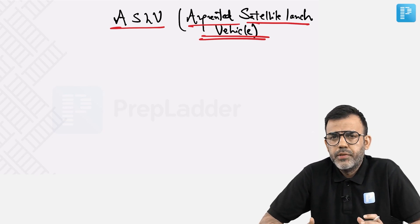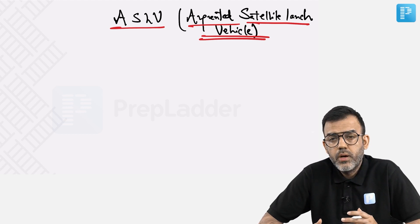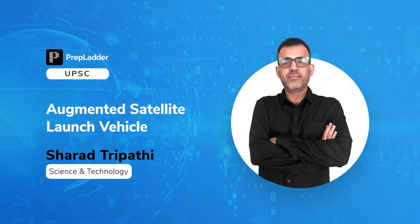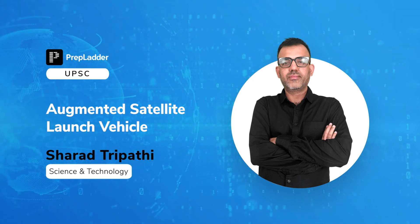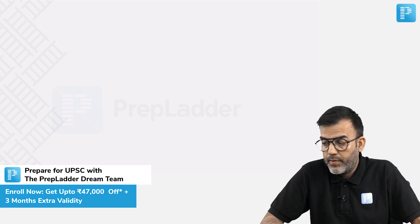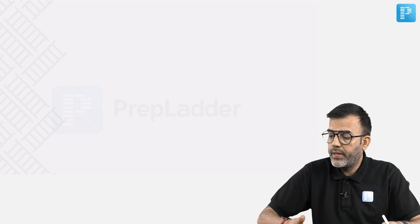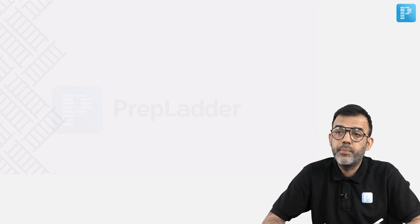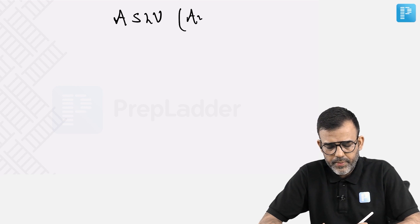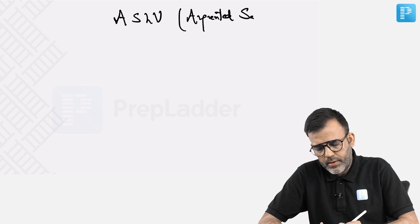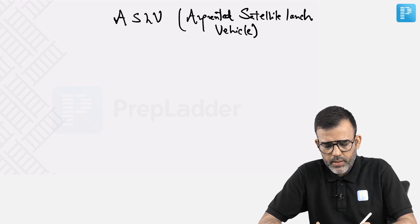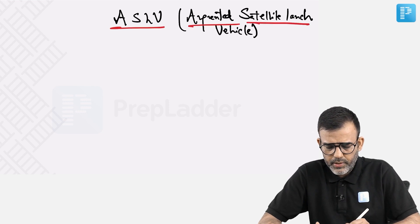The prominent thing about any launch vehicle is how many stages, what kind of fuel composition is there, and how high it can go. After SLV3, the first aspect was sounding rockets in the development of India's launch vehicle program, then came SLV3, and now is the turn of the third step. That is what ISRO termed ASLV, Augmented Satellite Launch Vehicle.